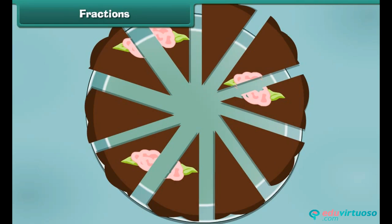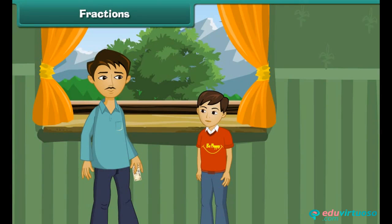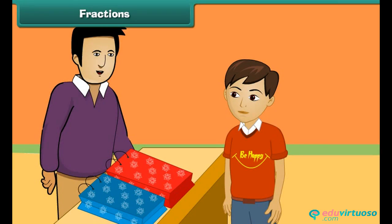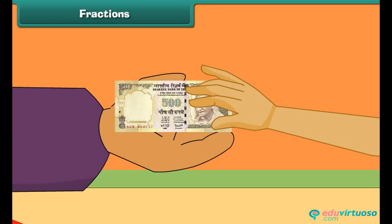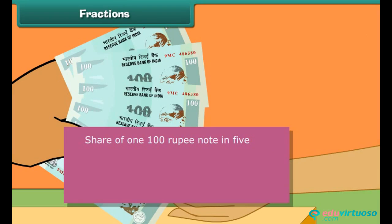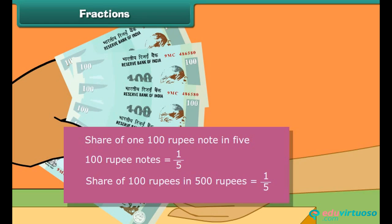Consider another example. Rishabh's father sends him to a nearby shop to get a five hundred rupee note exchanged for hundred rupee notes. The shopkeeper accepts the five hundred rupee note and gives five hundred rupee notes in return. Each hundred rupee note is one out of the five hundred rupee notes. Therefore, hundred rupees constitutes one by fifth of five hundred rupees.